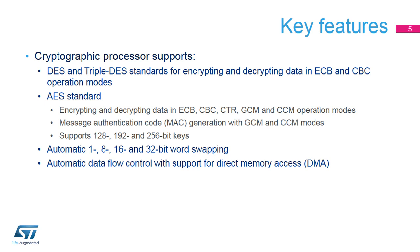DES uses a 56-bit key, while AES, which is more robust, can be used with a key of 128, 192, or 256 bits. A full data flow can be automated with the help of the Direct Memory Access Controller, or DMA.